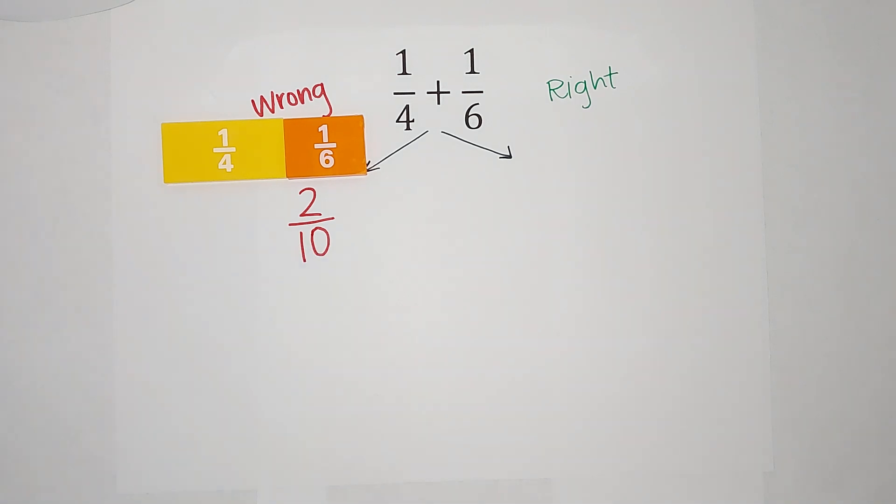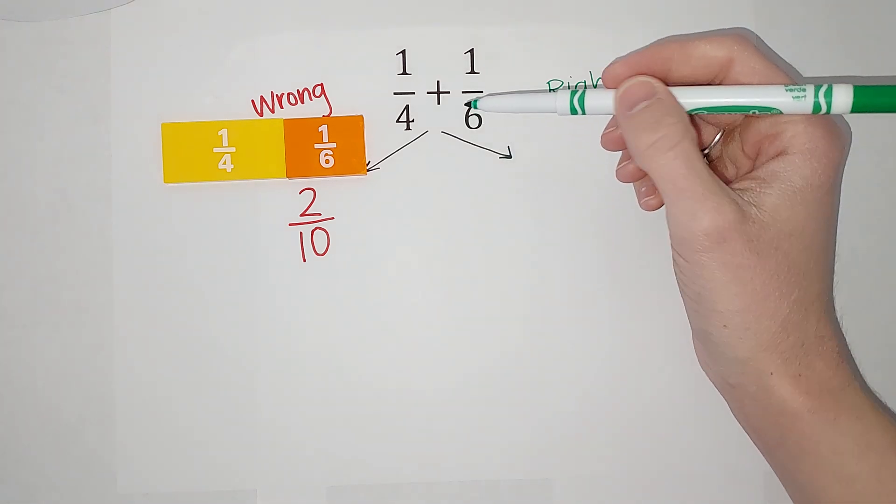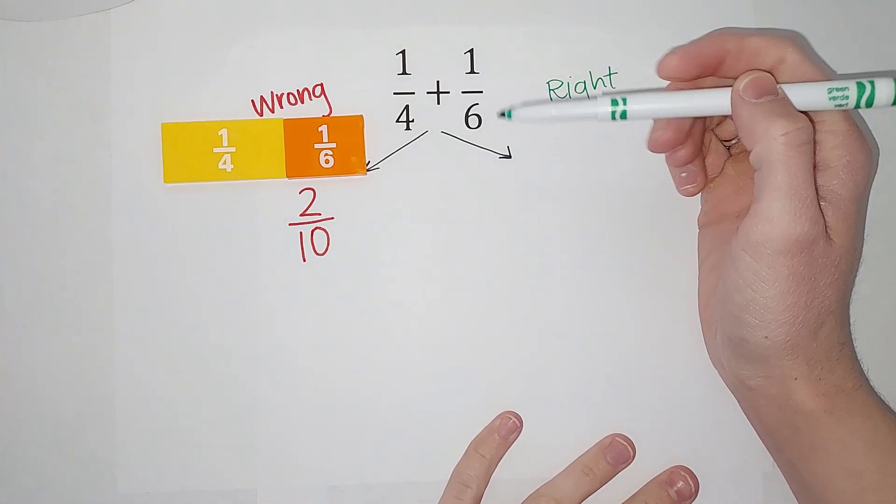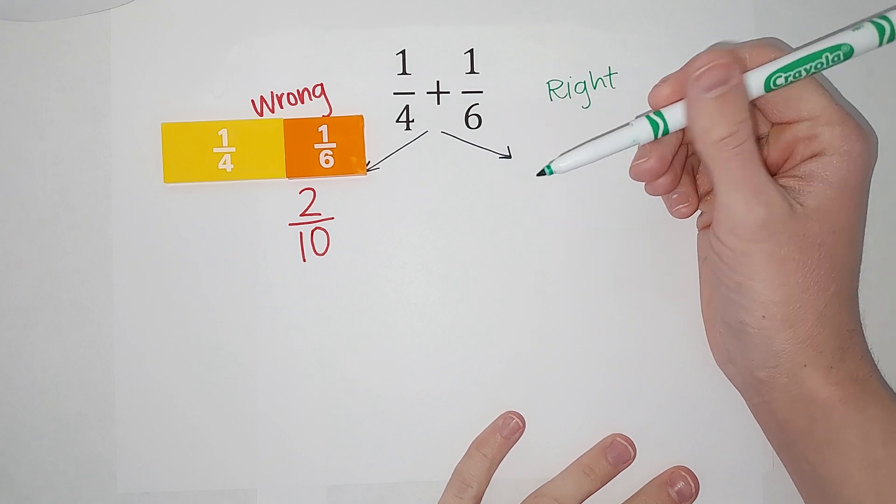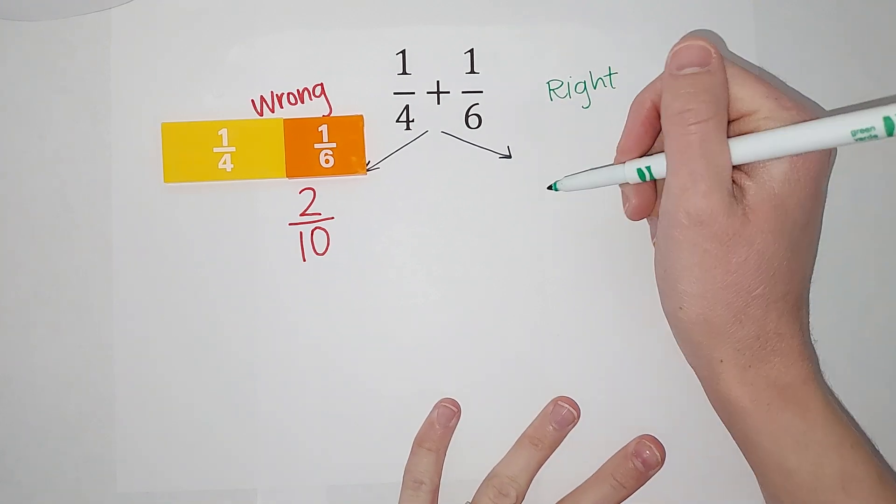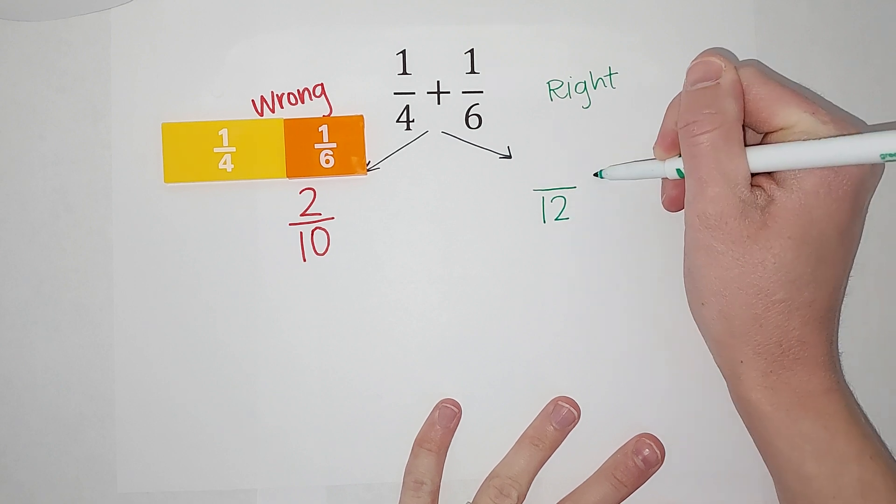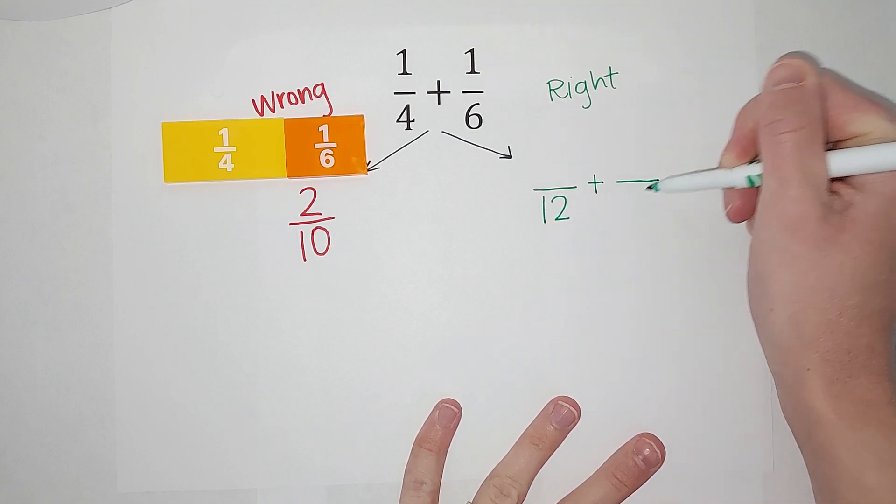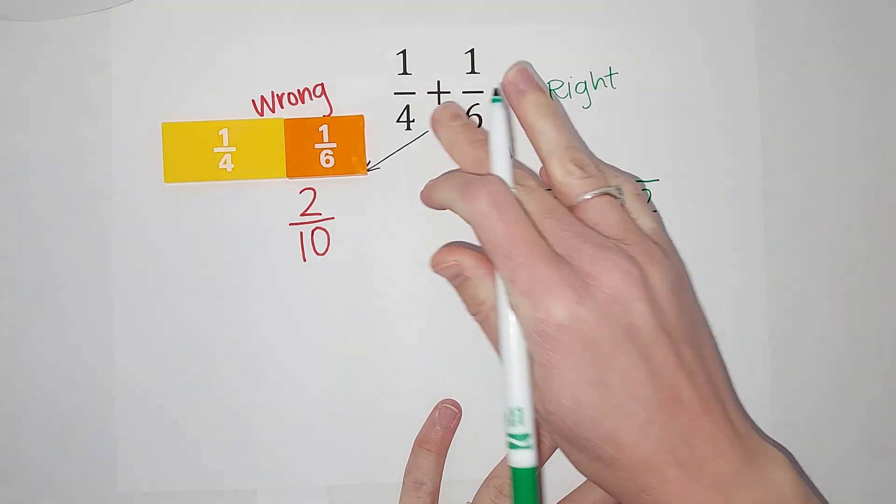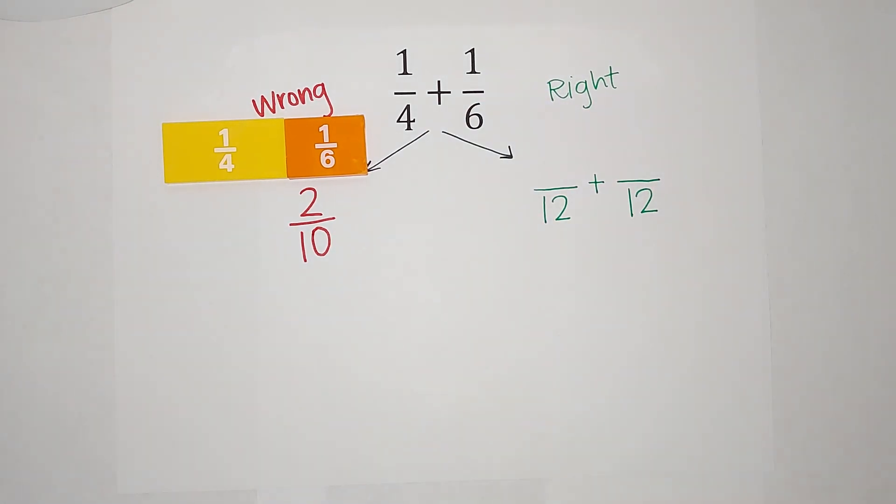But let us look at the correct way. So over here, when I'm adding these, I need to get the denominators the same. So I think, what is the smallest number they both go into? The smallest number they both go into is 12. So I want two fractions with the denominator of 12 that are equal to these fractions. If you need some more adding and subtracting fraction videos, I will link a video in the corner.